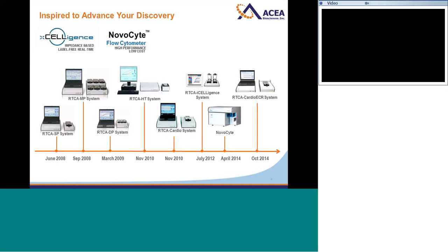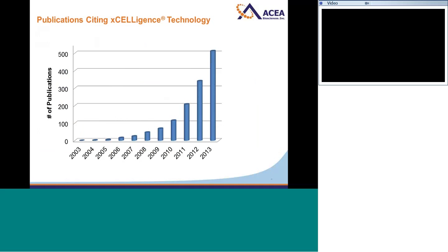Founded in 2002, ACIA Biosciences is a pioneer in developing and commercializing high-performance cutting-edge cellular analysis platforms for life science research. ACIA's Accelogen impedance-based label-free real-time cell analysis system and Novocyte benchtop flow cytometry are used in preclinical drug discovery and development, toxicology, safety pharmacology, and basic academic research. In the past few years, we have seen a steady growth of publications citing Accelogen's technology — as of now, there are over 600 publications already.